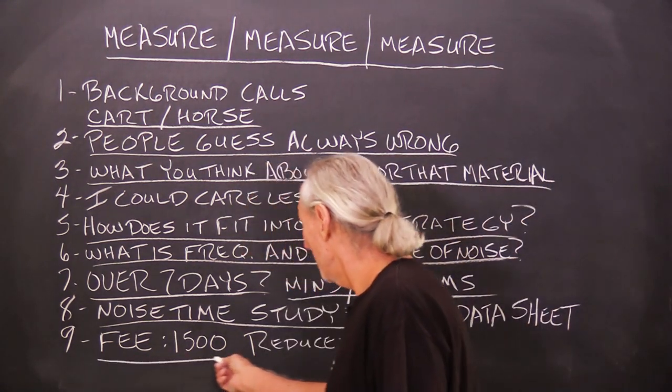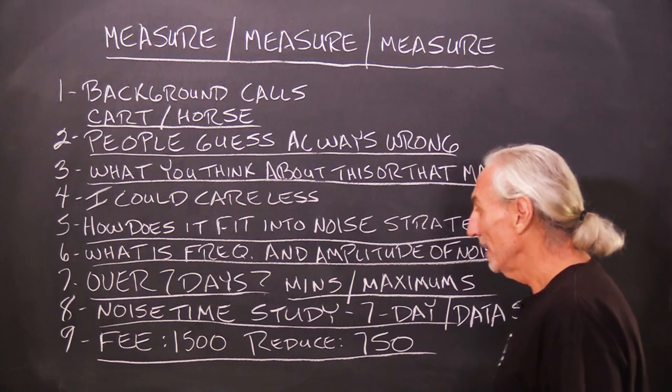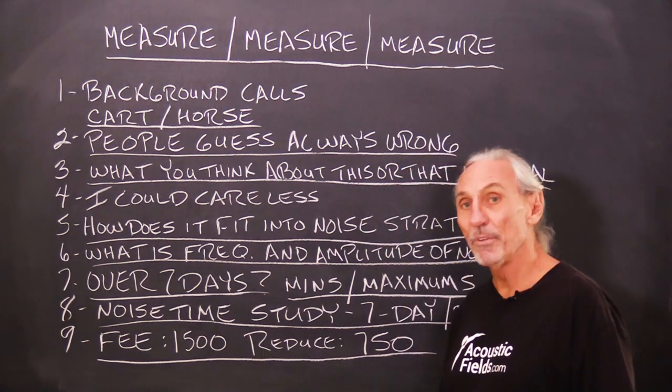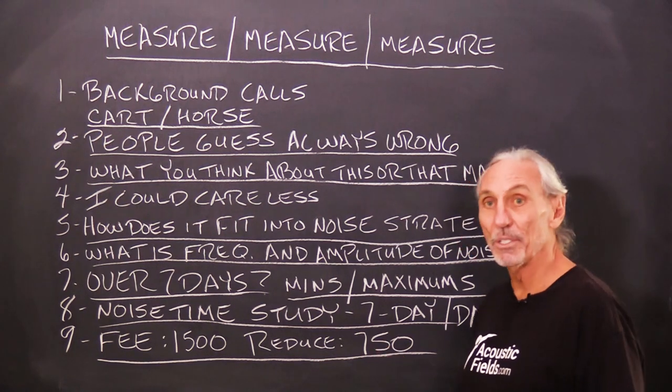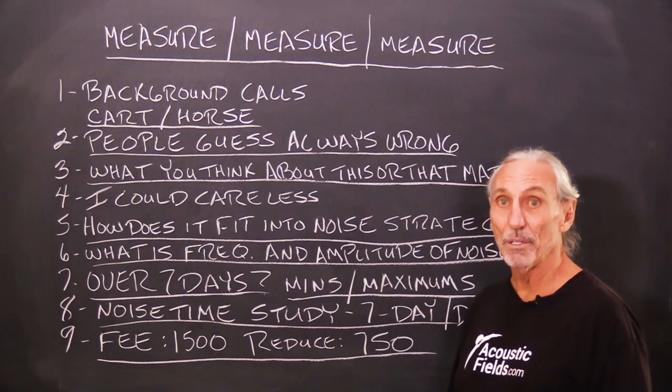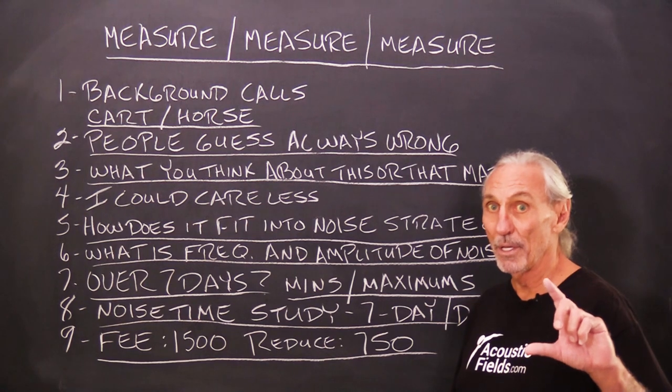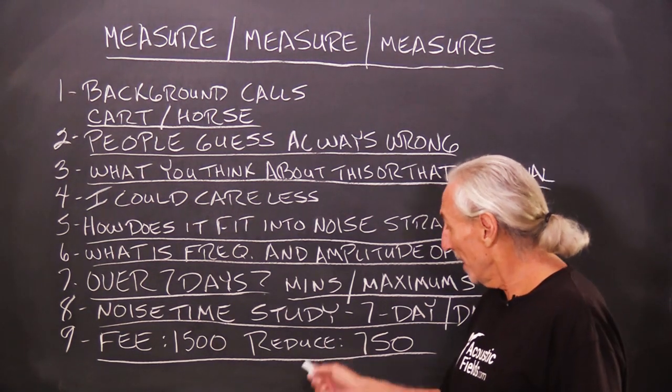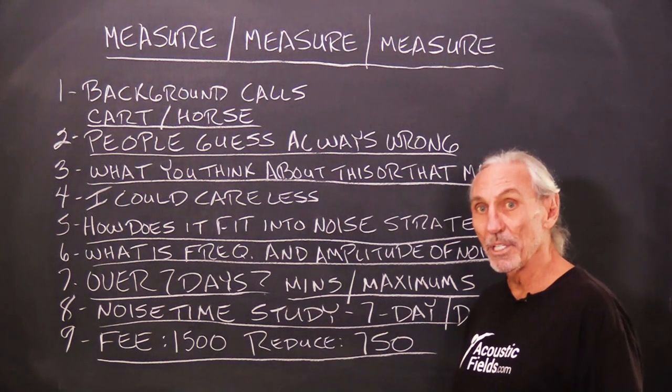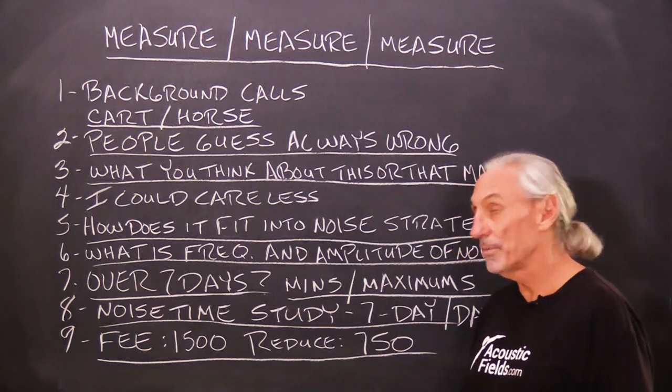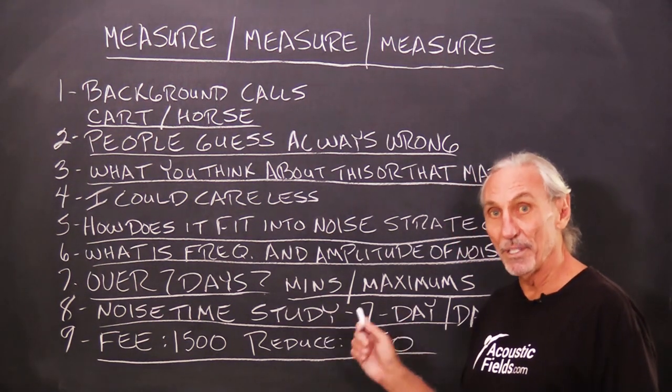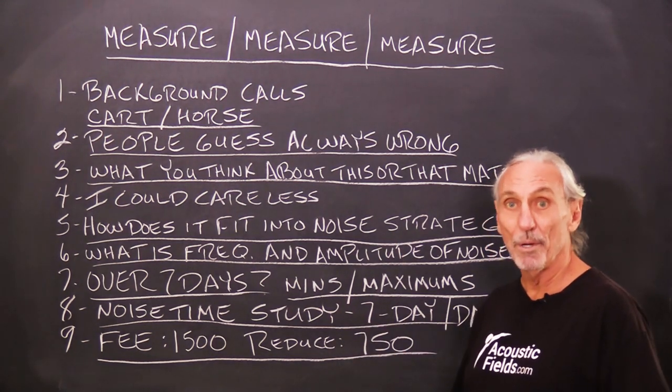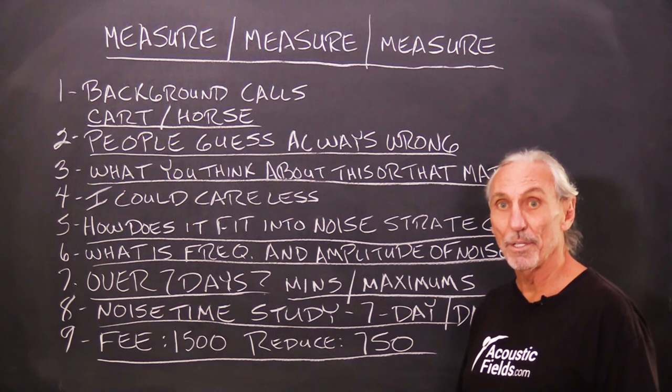So what we're going to do here for the first time is we're going to reduce our fee. Our normal fee for this is $1,500. I'm going to reduce it to $750. So those of you that see this video, it's going to be a short time window. We've got a little time now. We're all caught up on noise work. So we can help you. So once you see this video and you see the reduced fee, send me an email. Say, Dennis, I saw the measure, measure, measure video, and I want to take advantage of it. We'll get you started in the process.